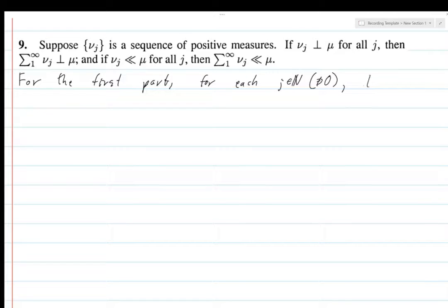For each of these let X equal N_j disjoint union M_j where nu_j lives on N_j and mu lives on M_j. This is possible by definition because these are mutually singular and when I say like nu_j lives on N_j